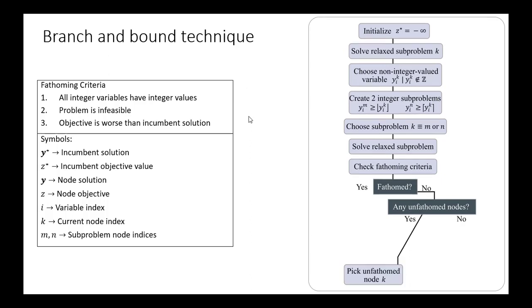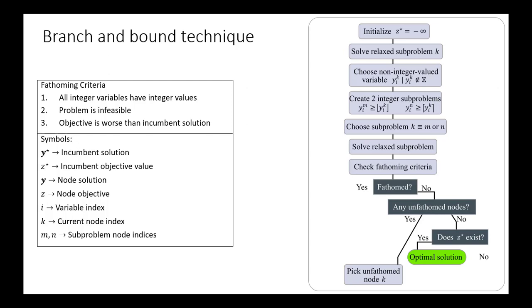If there are any remaining unfathomed nodes, we'll pick a new unfathomed node and call that node k, updating our value of k. If there are not any unfathomed nodes, then we need to see if certain conditions exist. If there's no unfathomed nodes, that means there's nowhere left to explore. Has there been an incumbent solution identified? Has there been a Z star identified? If there has been a Z star identified, then that is the optimal solution. Z star is our best integer solution that we've identified. If there's no remaining nodes, then of course that's the optimal solution. If Z star does not exist, then there's nowhere else to look. We have not identified an integer solution, we've explored the entire tree, so we actually have an infeasible problem. And then the algorithm terminates.